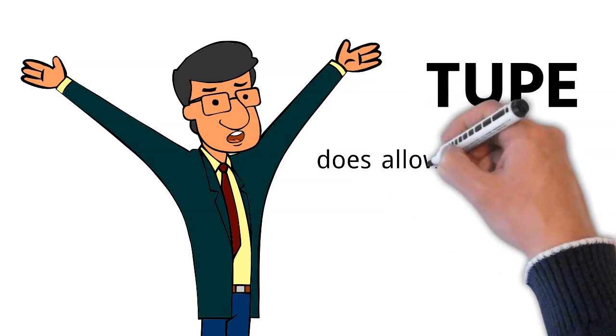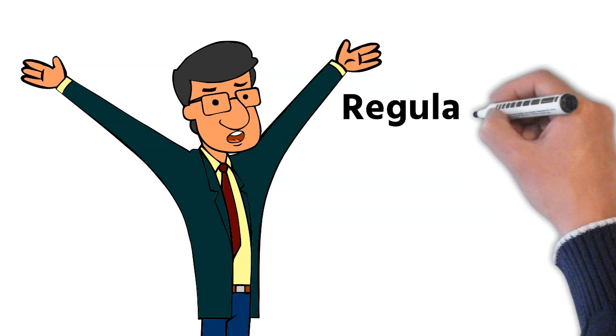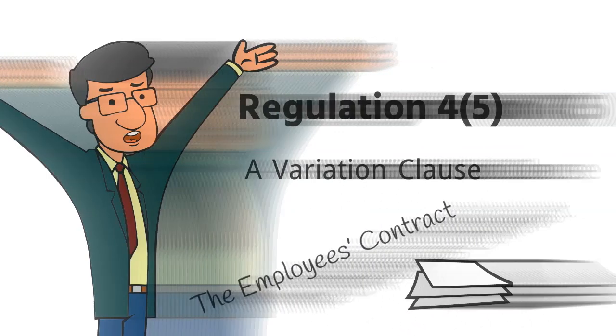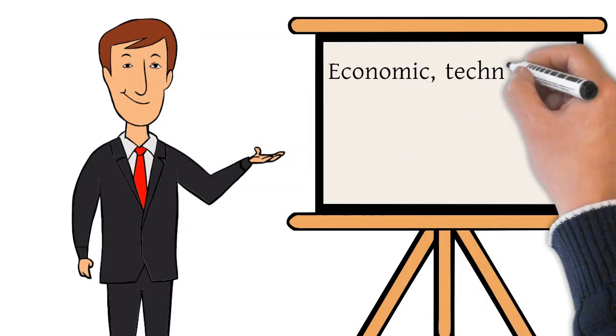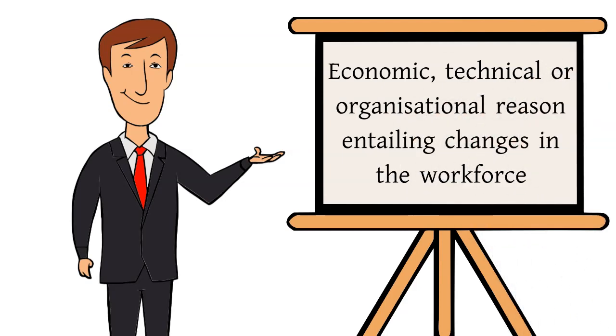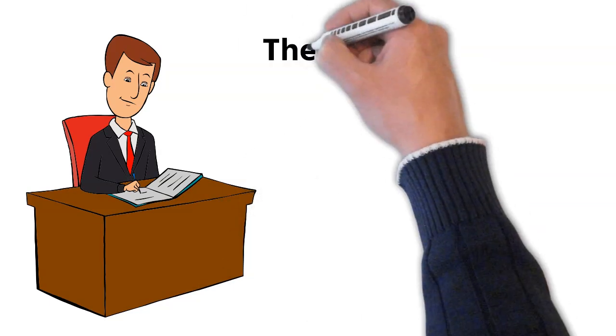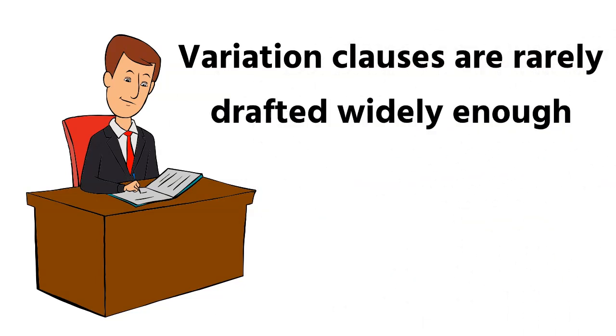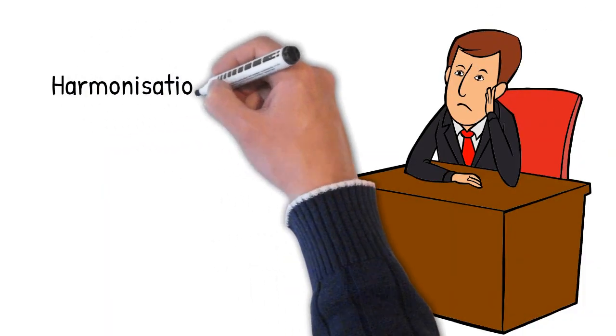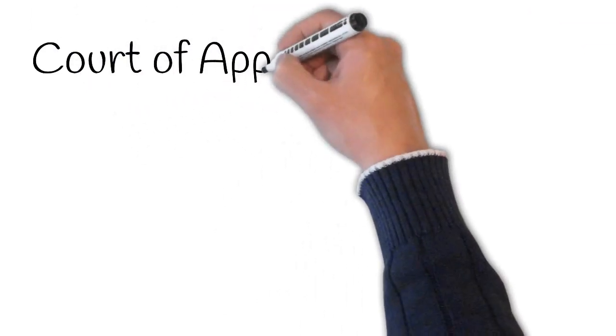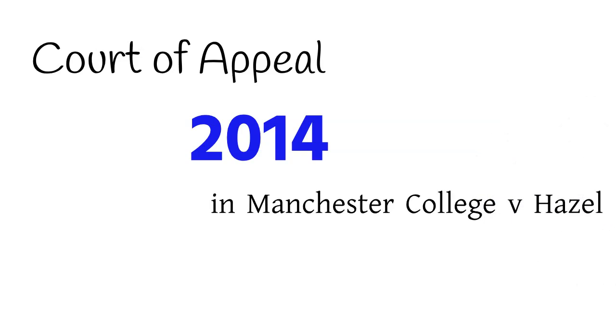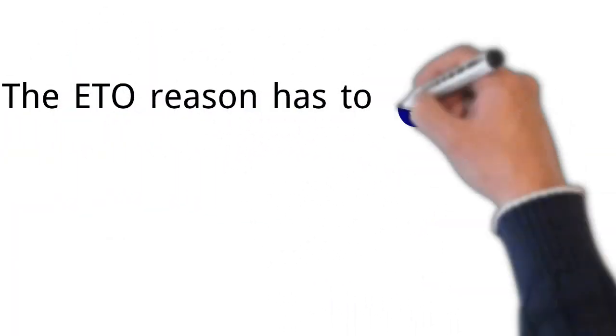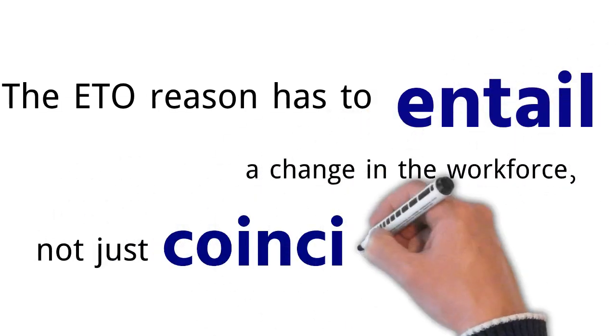Now, TUPE does allow for some changes in some circumstances. Regulation 4.5 says the employer can make changes that are permitted under a variation clause that's already in the employee's contract. It also provides that a change will be valid if it's for an economic, technical or organisational reason entailing changes in the workforce. The problem is that neither of these options is likely to allow for the harmonisation of terms and conditions. Variation clauses are rarely drafted widely enough, and changes in the workforce have to involve a change in its size or composition. Harmonisation per se doesn't meet that test, and this, as the Court of Appeal held in 2014 in Manchester College v Hazel, is the case even where the harmonisation takes place alongside a redundancy exercise. The economic, technical or organisational reason has to entail a change in the workforce, not just coincide with one.